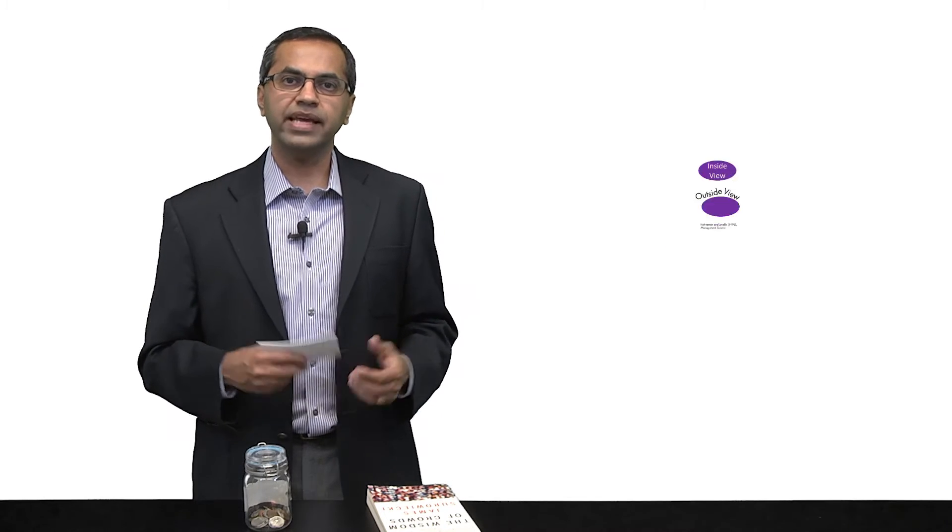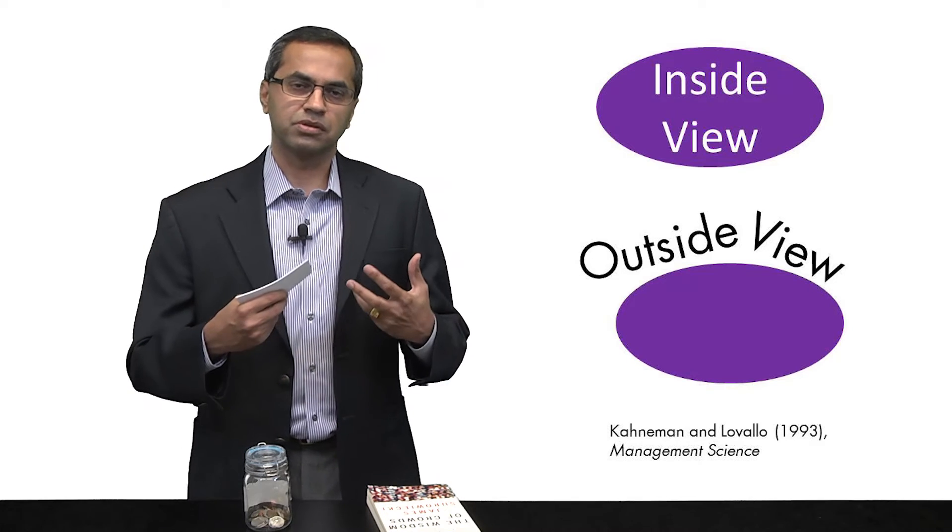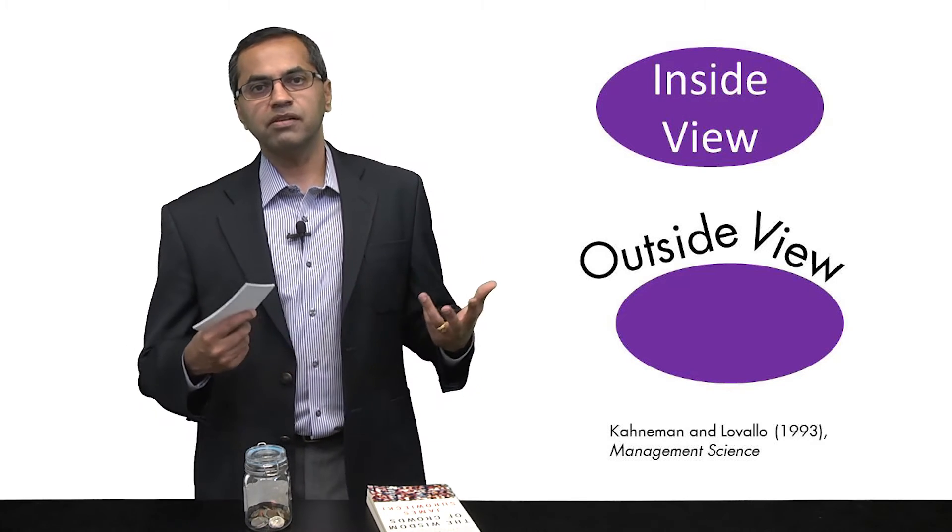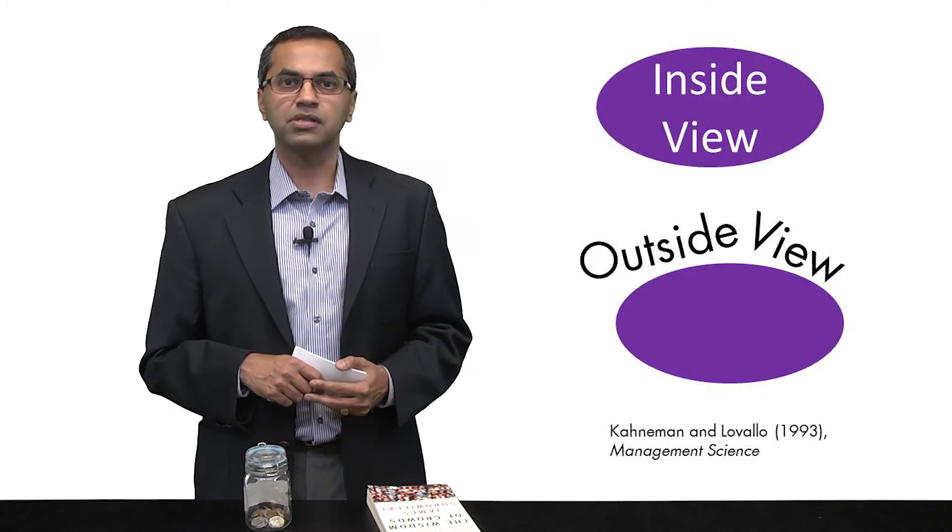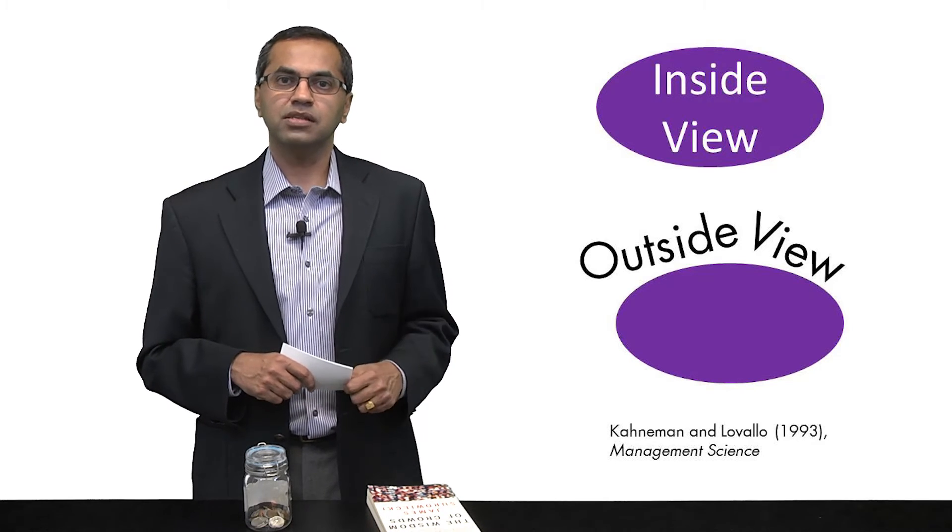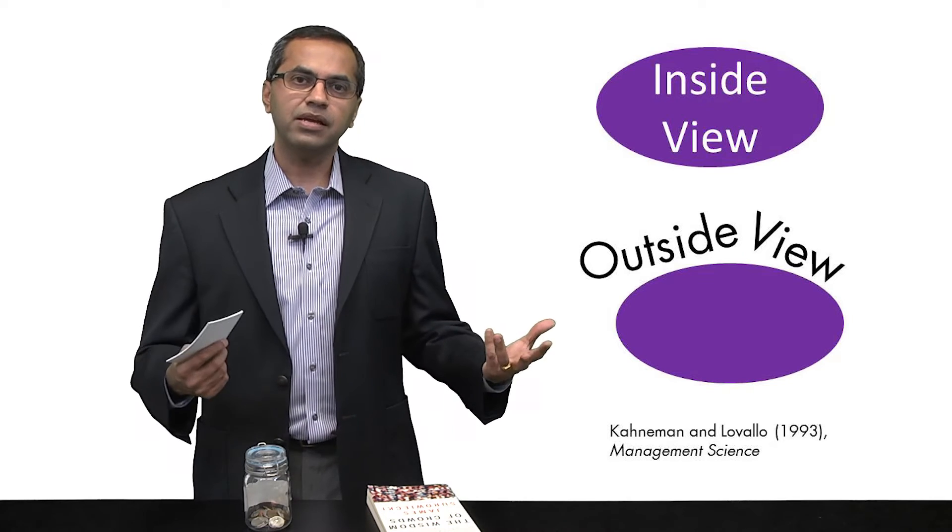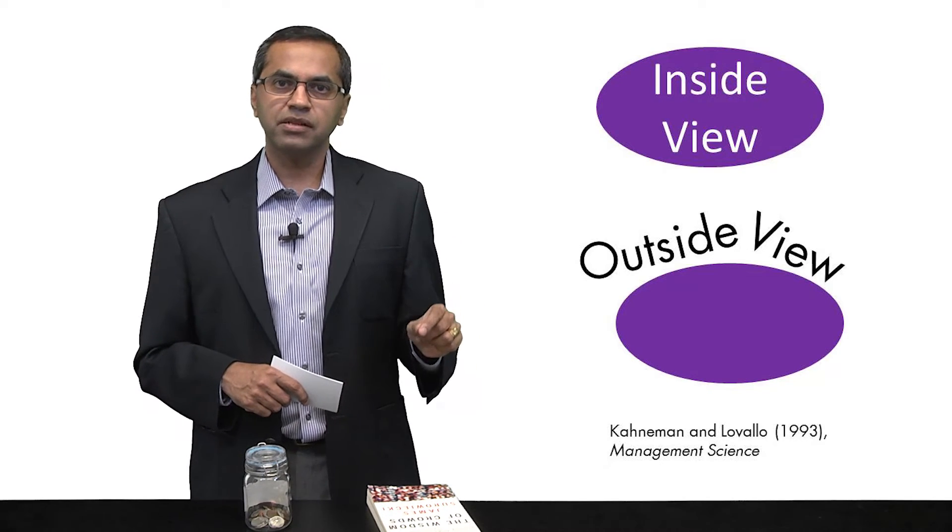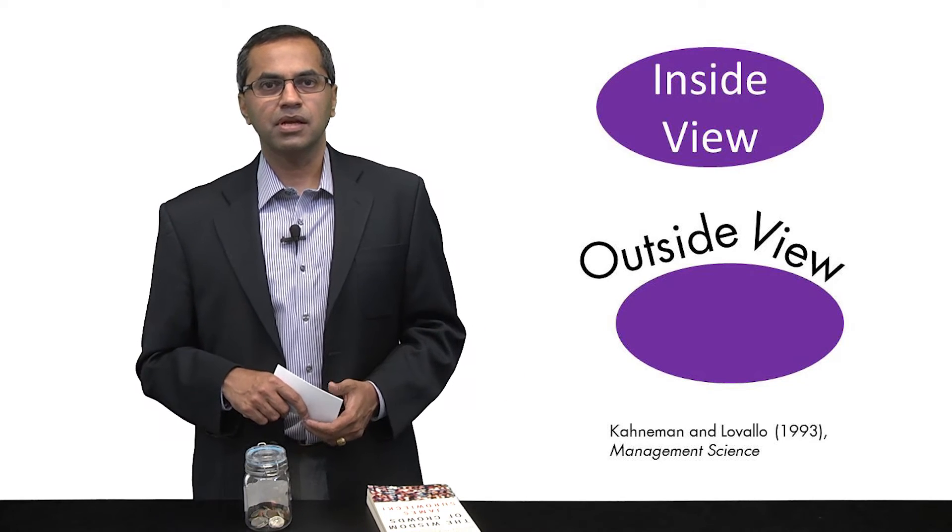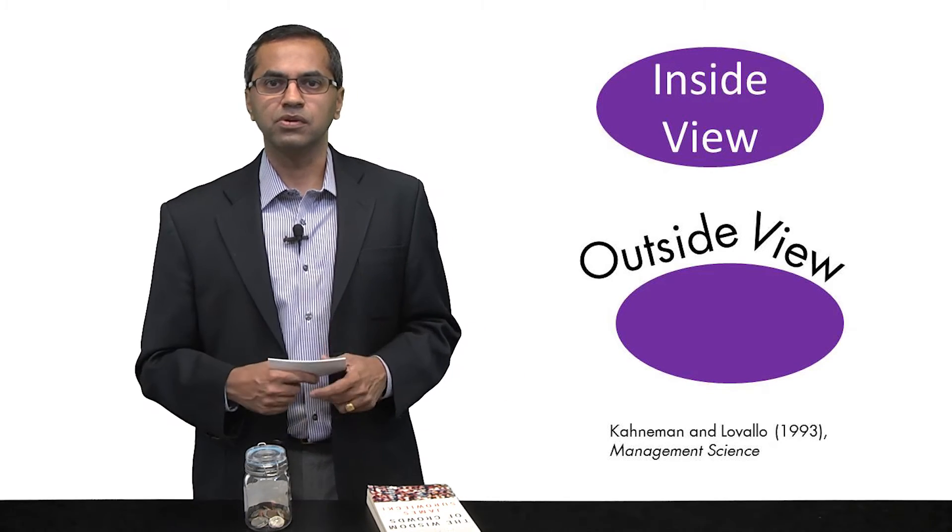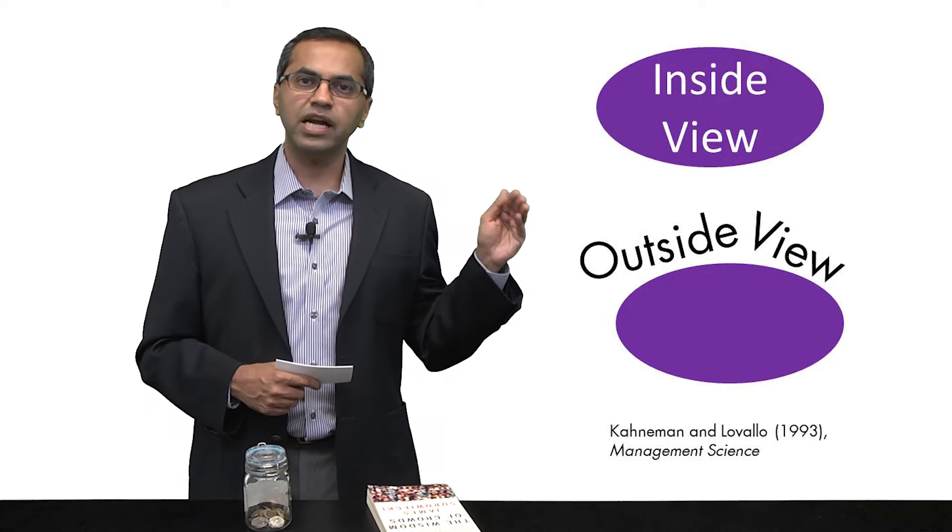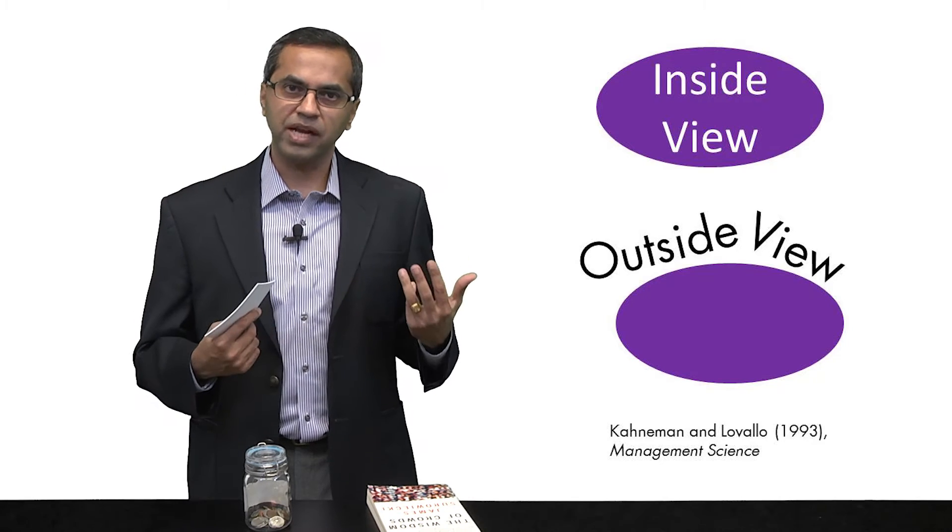Danny Kahneman and Dan Lovallo, a number of years back, wrote an interesting paper that they call the inside versus the outside views of problems or predictions or organizations. They were studying venture capitalists. And they would go and ask venture capitalists or entrepreneurs questions such as what do you think is going to be the likelihood that your company is going to be successful defined in a given way five years from now? And let's say the entrepreneurs say 50 percent. They would then say, well, but the average success rate in this industry is only 10 percent. That's the difference between an inside view and an outside view.